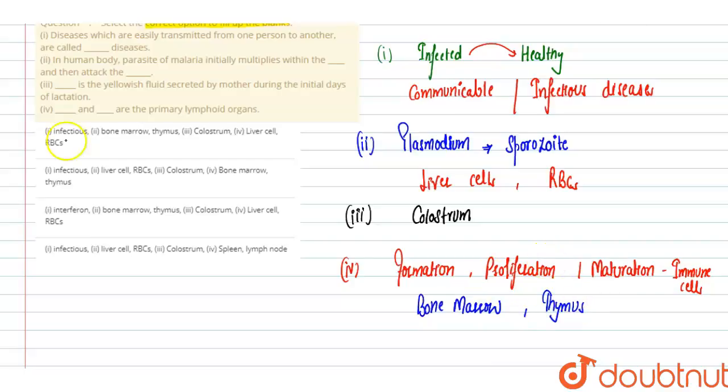Now if you see the options one by one. First one is infectious - that is correct. Next is bone marrow, thymus. This is incorrect because that is the fourth one, so this becomes an incorrect option. Next option: infectious, second one is liver cell RBC, third is colostrum, fourth is bone marrow thymus. This is our correct option.